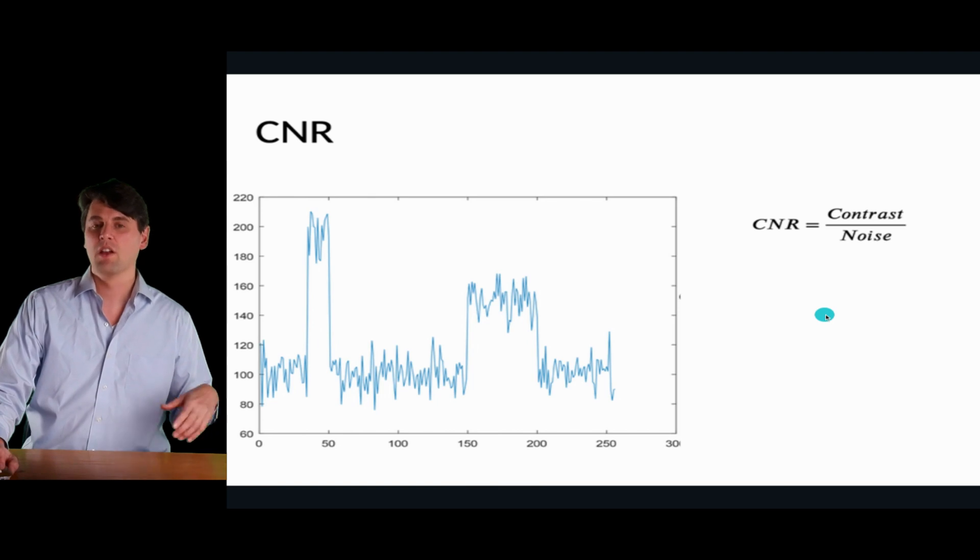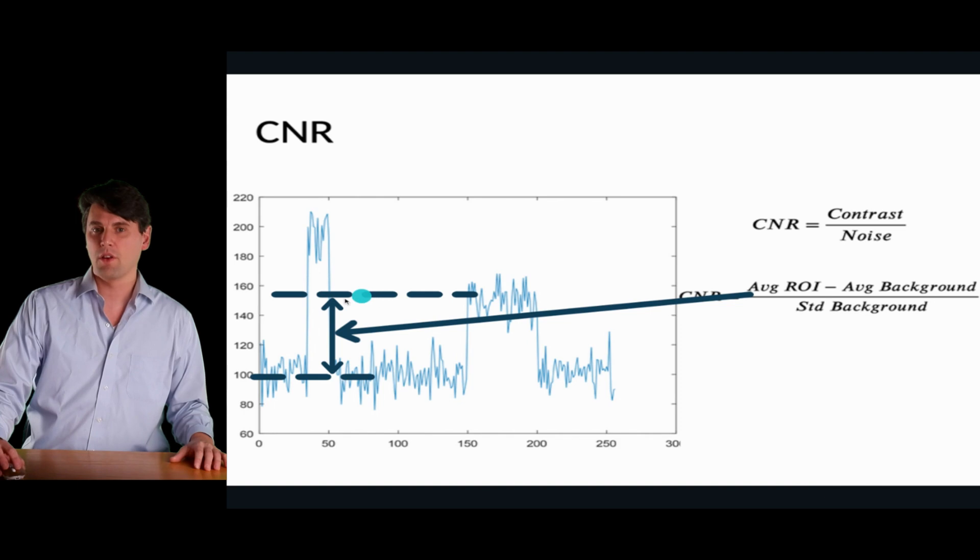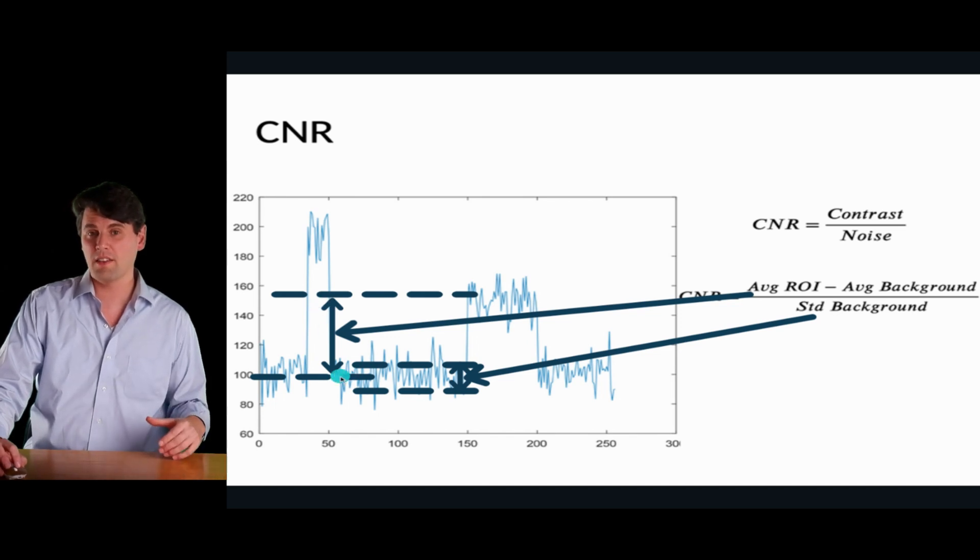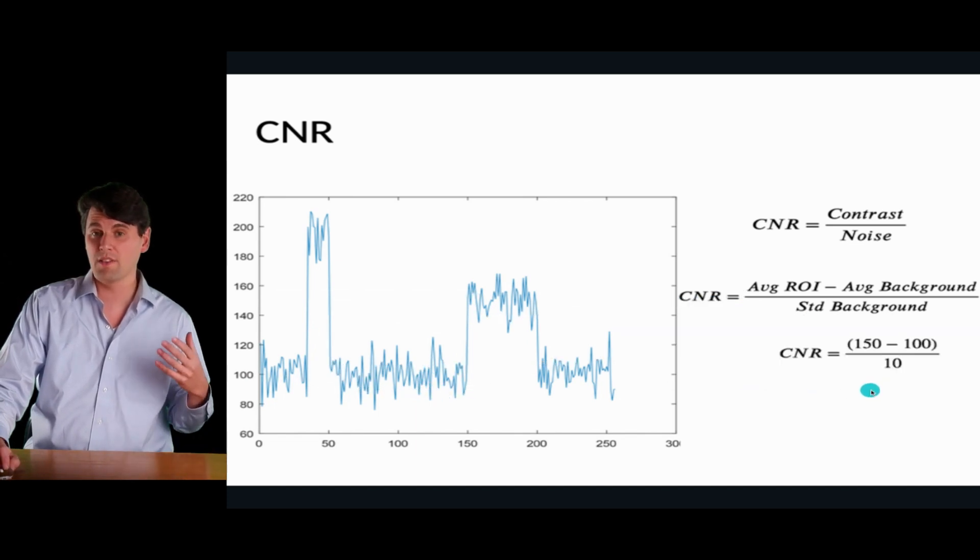Then the question is, what would be the contrast-to-noise? So again, with the exact same data, now with contrast, we're actually more concerned with the ability of the system to differentiate this object with respect to the background. So now we want to look at the difference between the signal. So the contrast is the difference between the signal here and here. And then again, contrast-to-noise, we're going to be dividing by that standard deviation of the noise in the background. Now the contrast-to-noise here is going to be, this is about 150, this is about 100. So the contrast is about 50 here. And then the noise value is the same there of about 10. So the contrast-to-noise is going to be 50 divided by 10 or about 5.